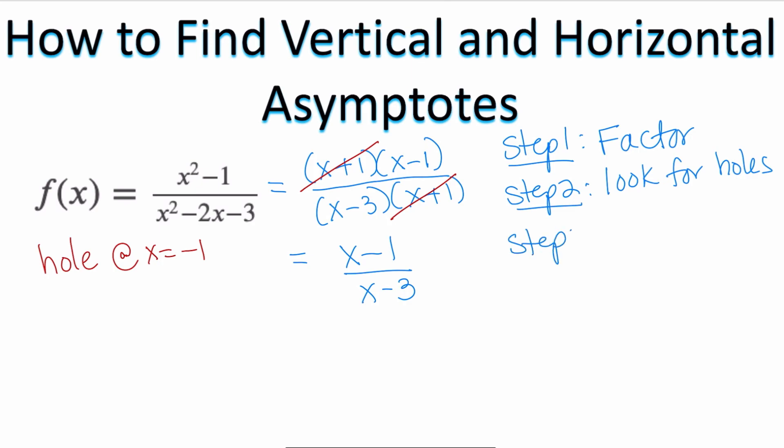So now I'm ready for step 3. Once I have factored, I've looked for holes, then I'm going to find the vertical asymptote. The way you're going to find vertical asymptotes is that you're going to set the denominator equal to 0.